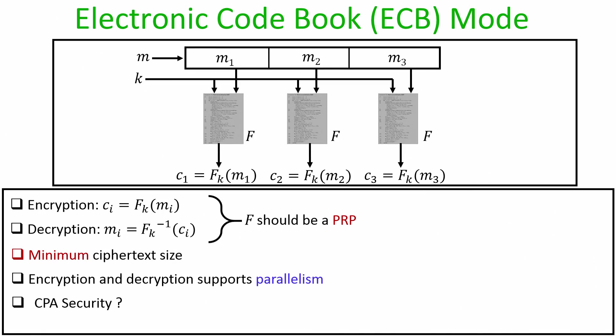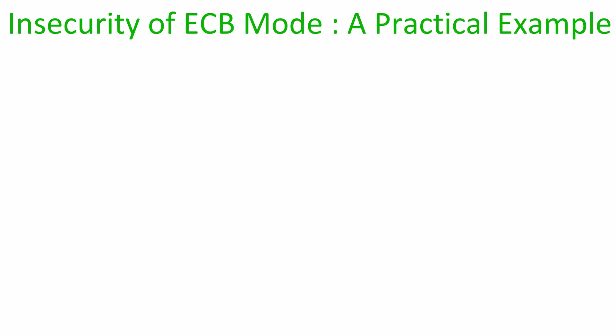Now, the most important question: is ECB mode CPA secure? The answer is absolutely no, because ECB is a deterministic encryption scheme. Wherever message blocks are repeated and encrypted under the same key k, the same ciphertext block will appear. This is fundamentally against the principle that CPA secure encryption must be randomized. Since ECB is deterministic, it cannot be CPA secure.